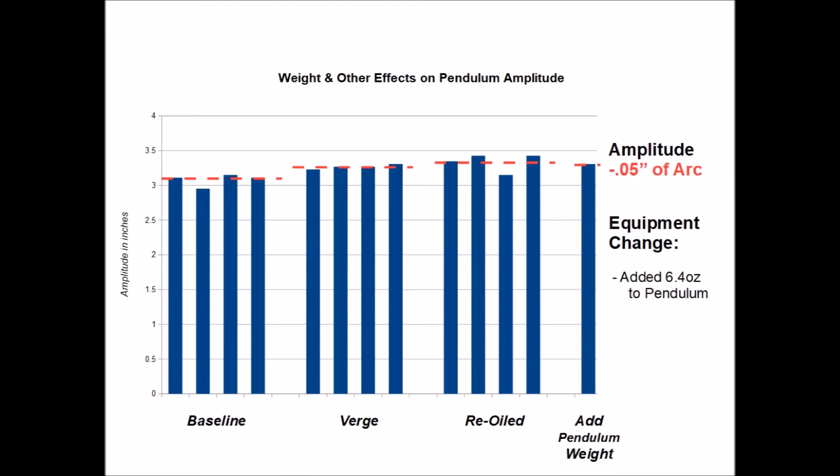When I added 3.2 ounces of fill to each one of the vials, the amplitude did decrease but only by 0.05 inches again, relatively insignificant.